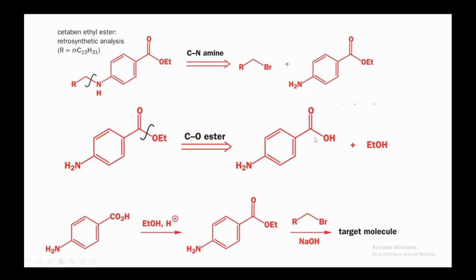Esters can be prepared when a carboxylic acid reacts with ethanol. In the forward direction, you react the acid with ethanol in acidic media to get the ester. The NH2 group is nucleophilic — you react it with an alkyl halide in the presence of a base to get the target molecule. Whenever you see an ester bond in a question, follow the strategy of disconnecting the ester. Learn the disconnection of secondary amines and esters as a pattern.